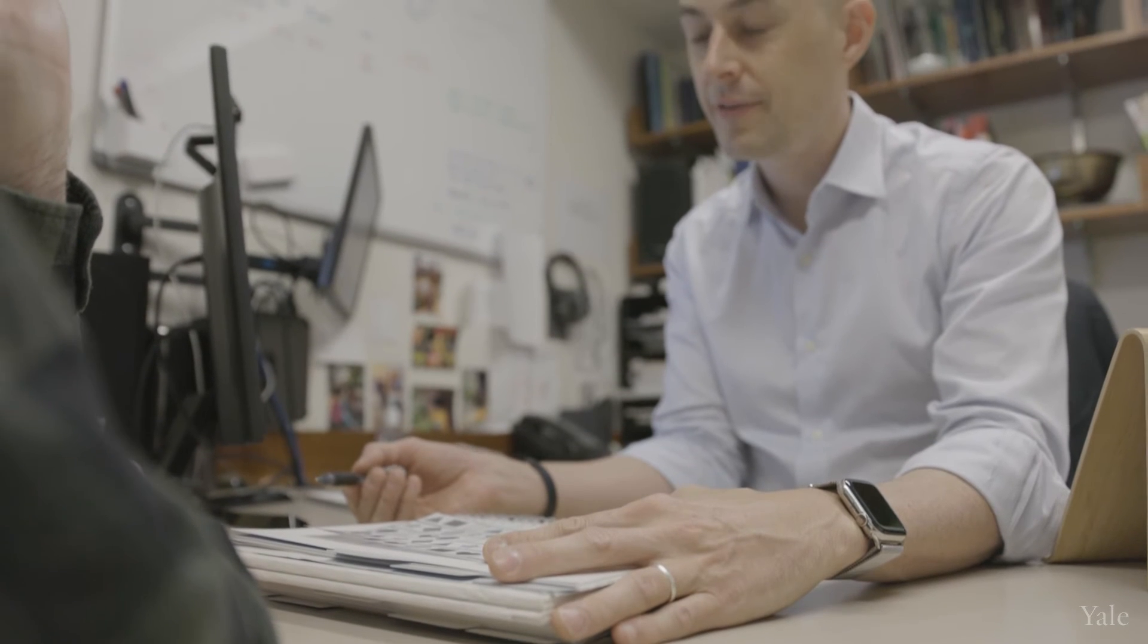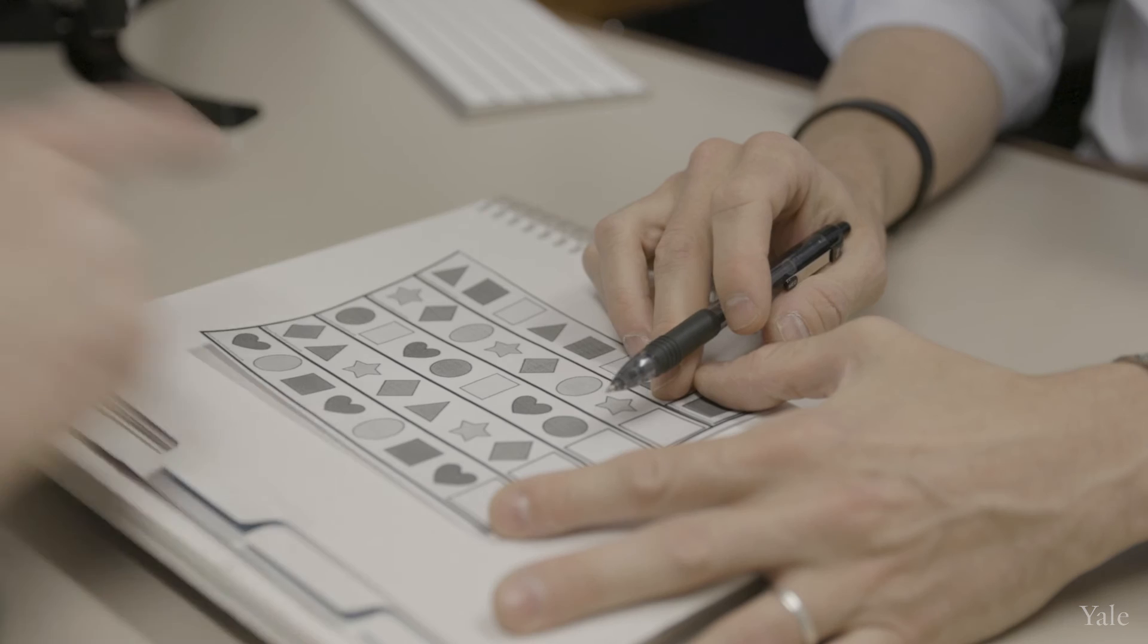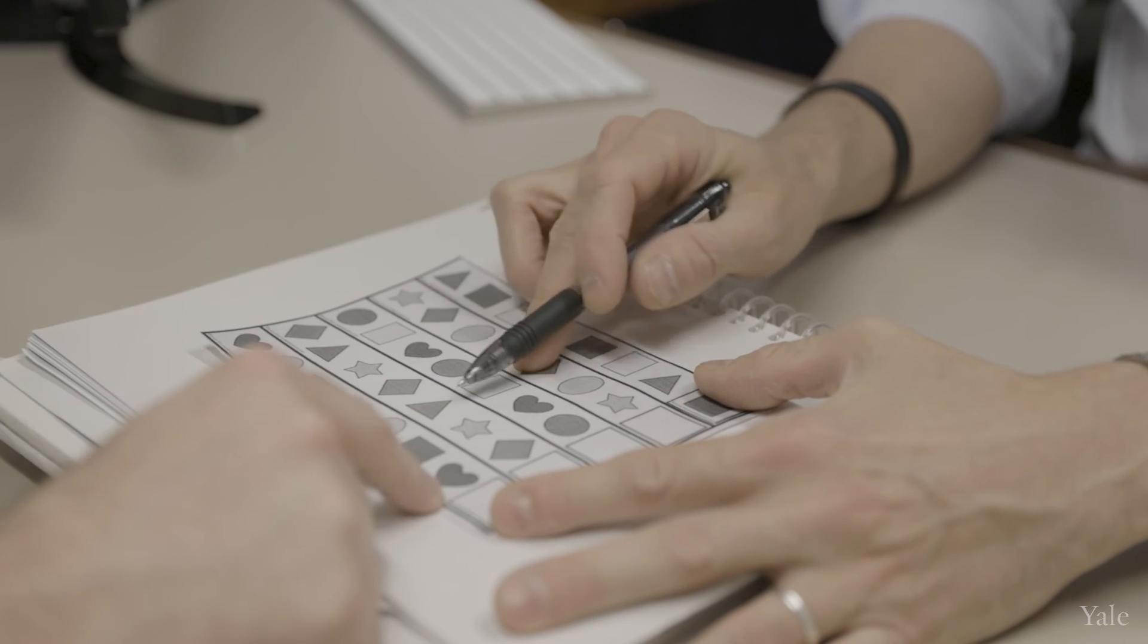The neuropsych assessment itself takes about four hours or so, so it's quite a lengthy kind of exam. Some of them are going to be so easy that it will seem silly and some of them are going to be too difficult.